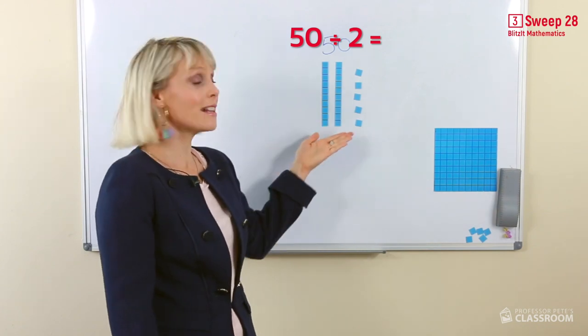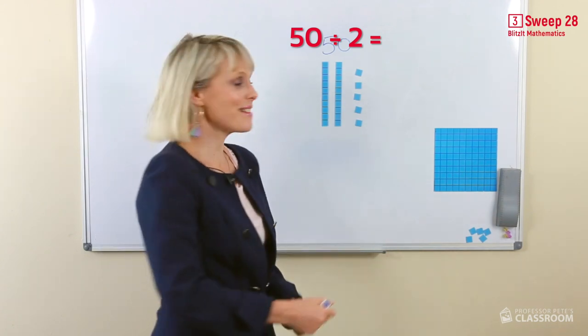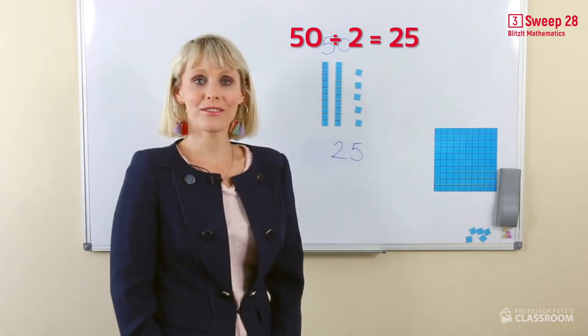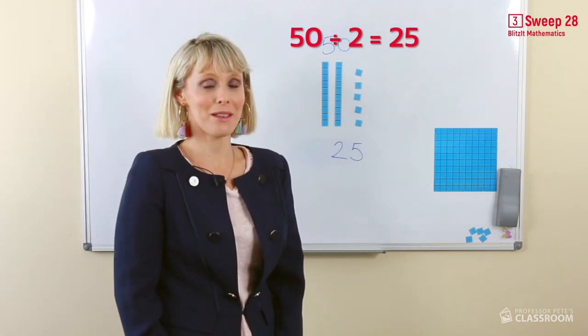Our answer is 2 tens, 5 ones. That is, that's right, 25. Half of 50 equals 25.